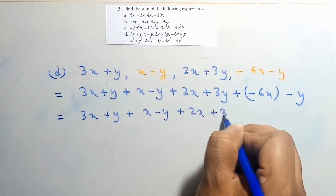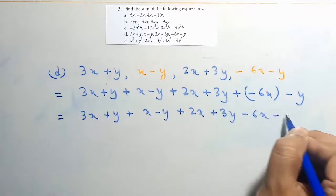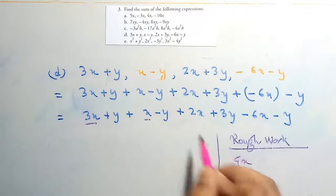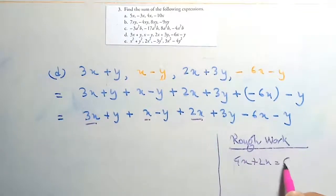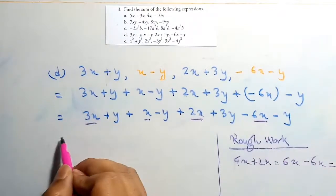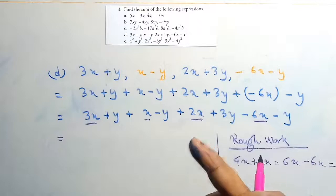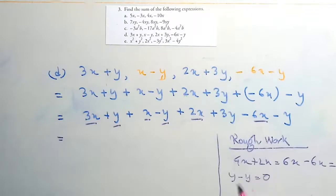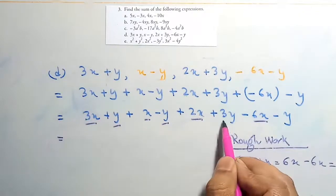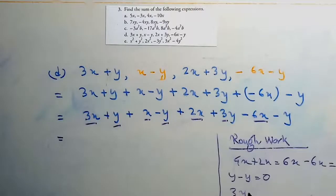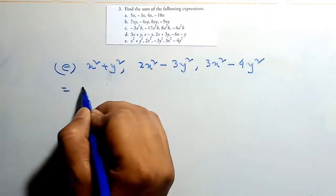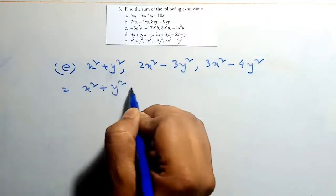Next expression: 3x plus y plus x minus y plus 2x plus 3y minus 6x minus y. For x terms: 3x plus x plus 2x minus 6x equals 0. For y terms: y minus y equals 0 and 3y minus y equals 2y. So the answer is 2y.